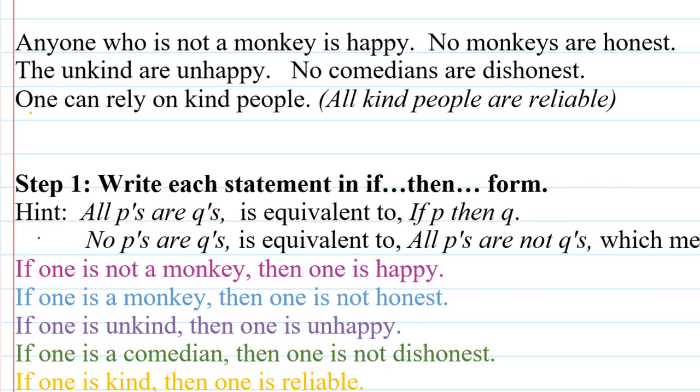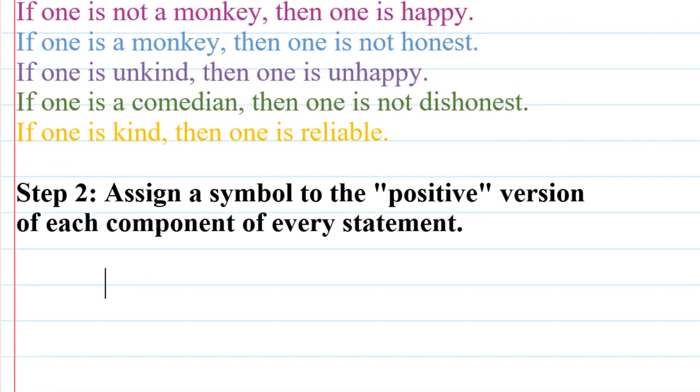So at this point, we have written each statement in if-then form. Step two is to assign a symbol to each component of each of these statements, and I say a positive version of the component, so let me explain what I mean by that. The first statement says if one is not a monkey, then one is happy. I'm going to choose to let P represent one is a monkey rather than one is not a monkey, the positive version of that statement. So in other words, one is not a monkey will be not P, and then I'm going to let Q be the component one is happy. I just find it less confusing to always assign the letter to the positive version of the statement, so when I see a negative word like not, that I know to use a negation symbol.